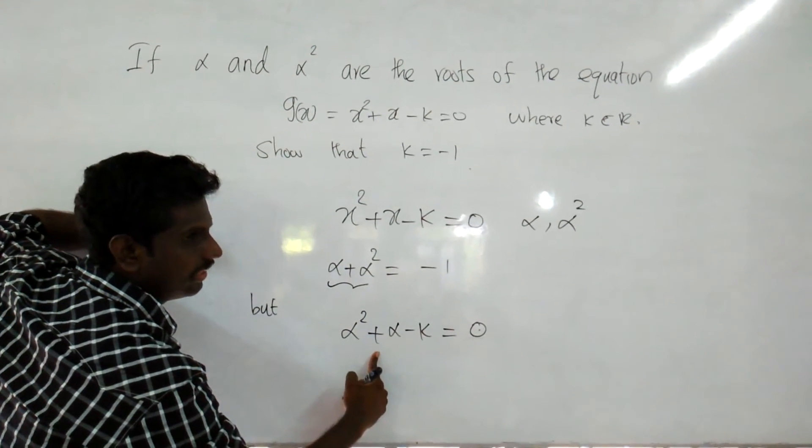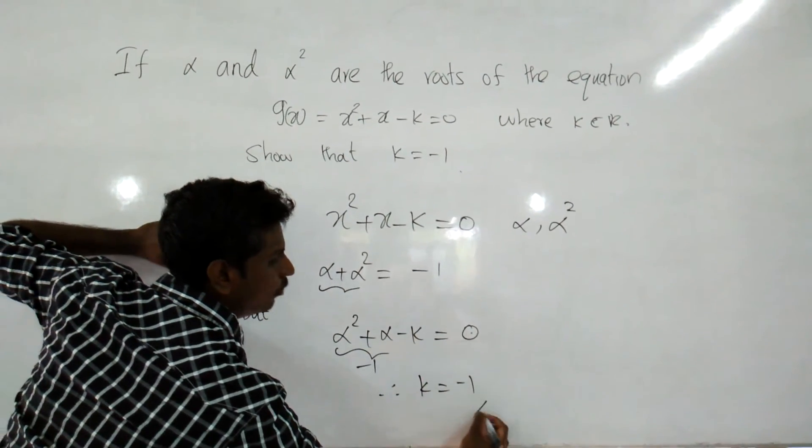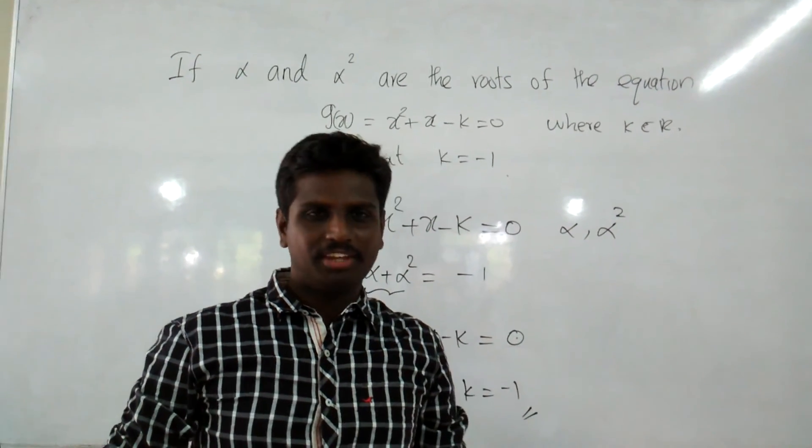So this is minus 1, so K is equal to minus 1. That's all. Thank you.